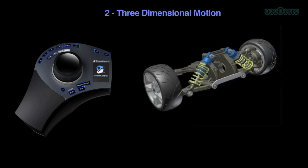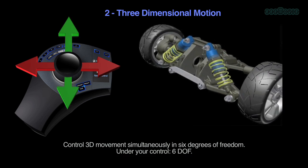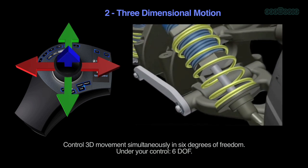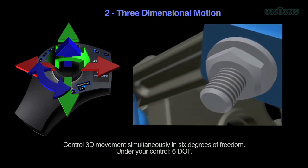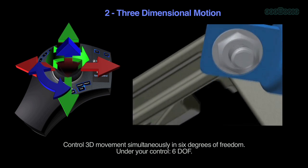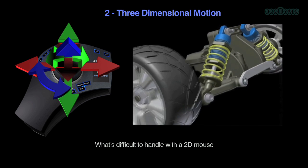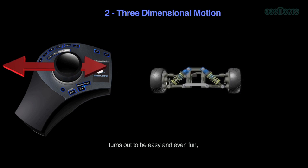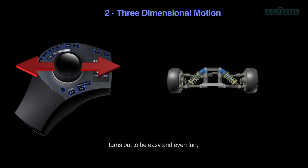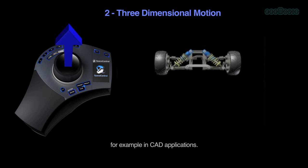Three-dimensional motion control: simultaneous 3D manipulation in six degrees of freedom under your control — 6DOF. What's difficult to handle with a 2D mouse turns out to be easy and even fun, for example in CAD applications.